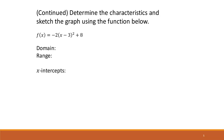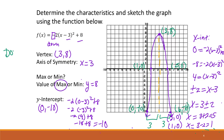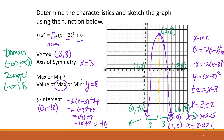This is the same problem, so let's write the domain and range. The domain is (−∞, +∞) because the parabola extends forever in both horizontal directions. The range starts from our maximum value: since the parabola opens downward and goes down forever, the range is (−∞, 8], where 8 is included.